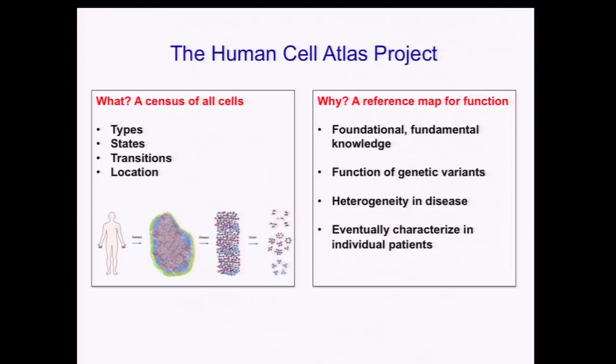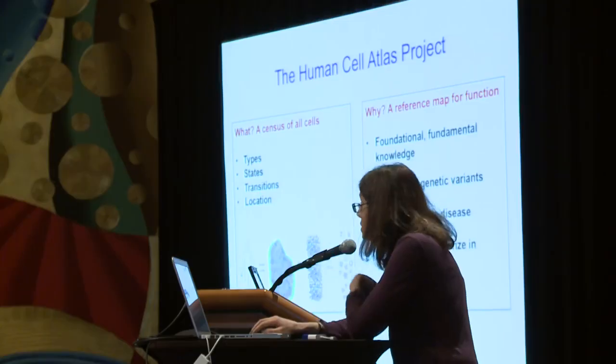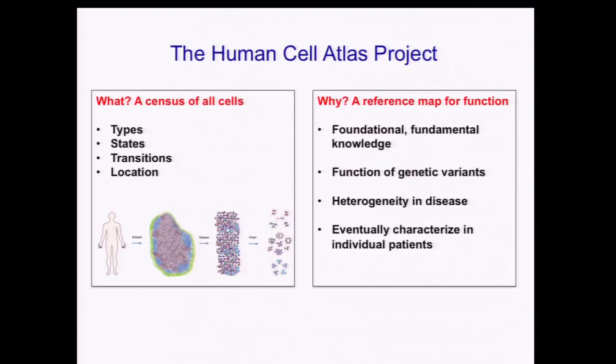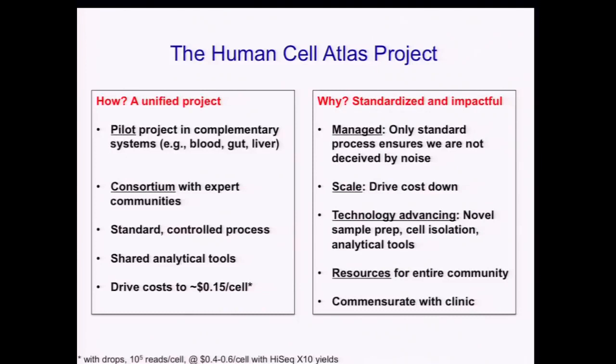First let me remind you why we would actually want such an atlas. This kind of atlas will be a reference map for all functional studies. It will provide us fundamental knowledge across all biological systems. It will allow us to characterize the function of genetic variants in the relevant cell type, interpret pathology and heterogeneity in disease with respect to a reference of normal, and eventually allow us to characterize this kind of heterogeneity in individual patients. I also want to claim that this can only be done within the context of one of those large-scale, managed, consortium-type, technology-advancing projects.